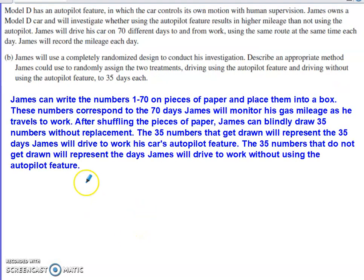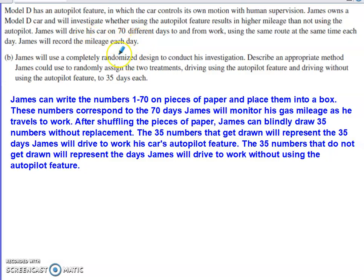The next part says that Model D has an autopilot feature where the car controls its own motion with a little bit of supervision. James owns one of these cars and is going to investigate whether using the autopilot feature results in higher mileage than not using it. James is going to drive the car 70 different days to and from work using the same route and the same time of travel each day, recording the mileage each day. James wants to use a completely randomized design — describe an appropriate method he could use to randomly assign the two treatments: driving with the autopilot feature and driving without it — for 70 total days, with 35 days each.